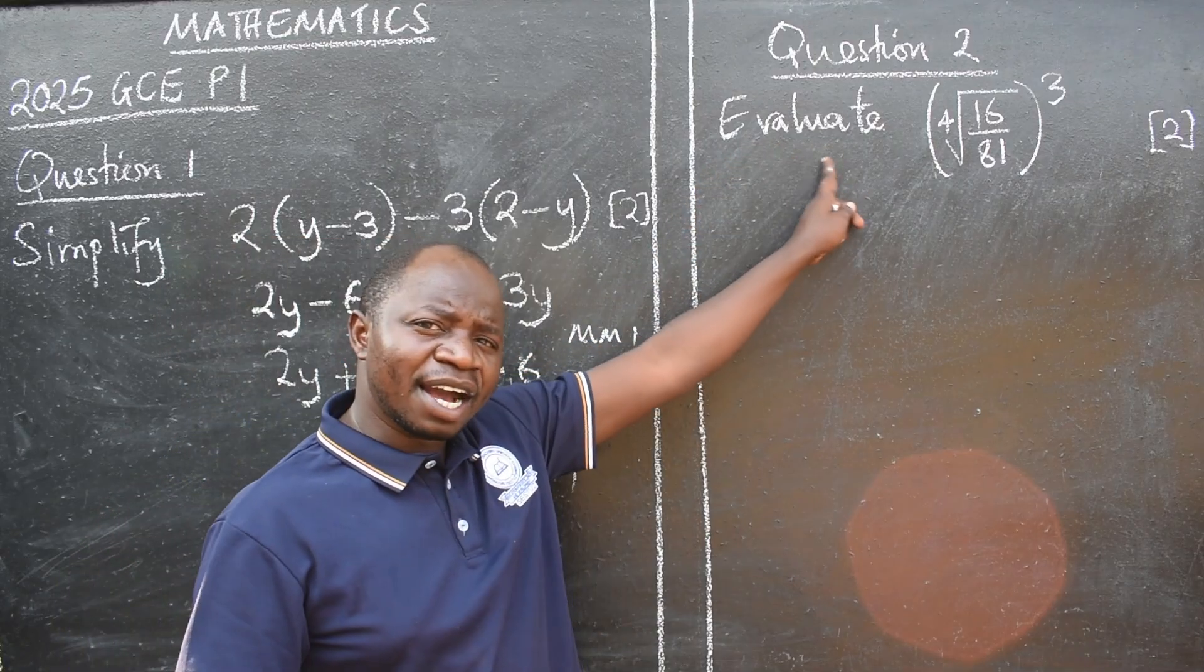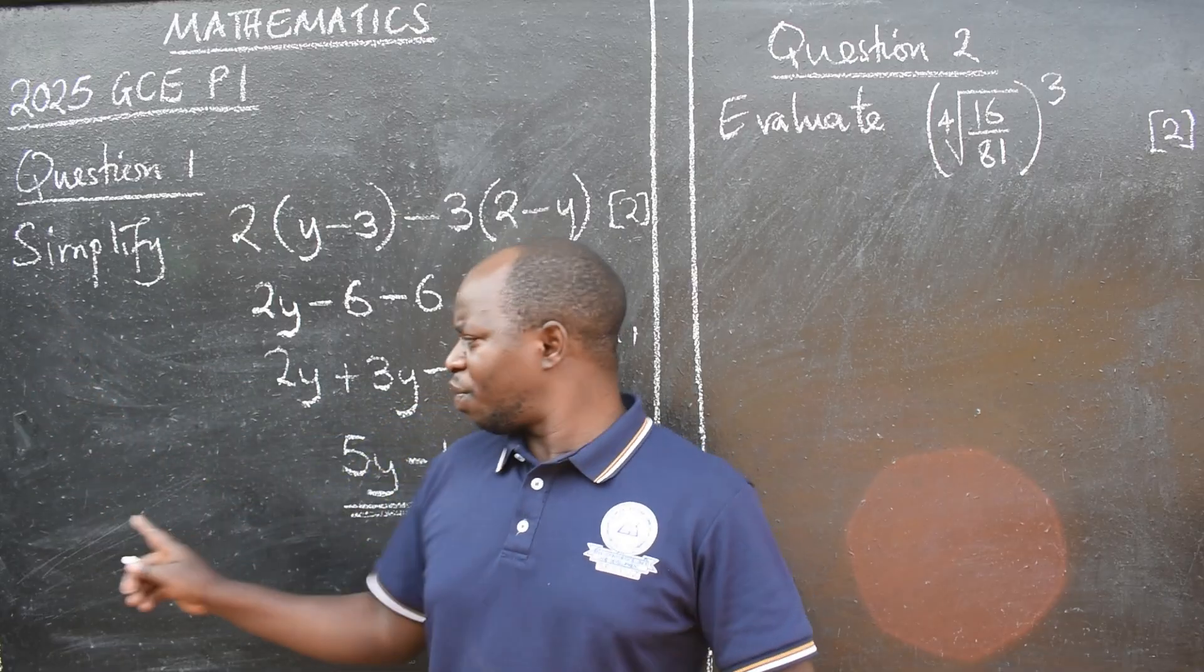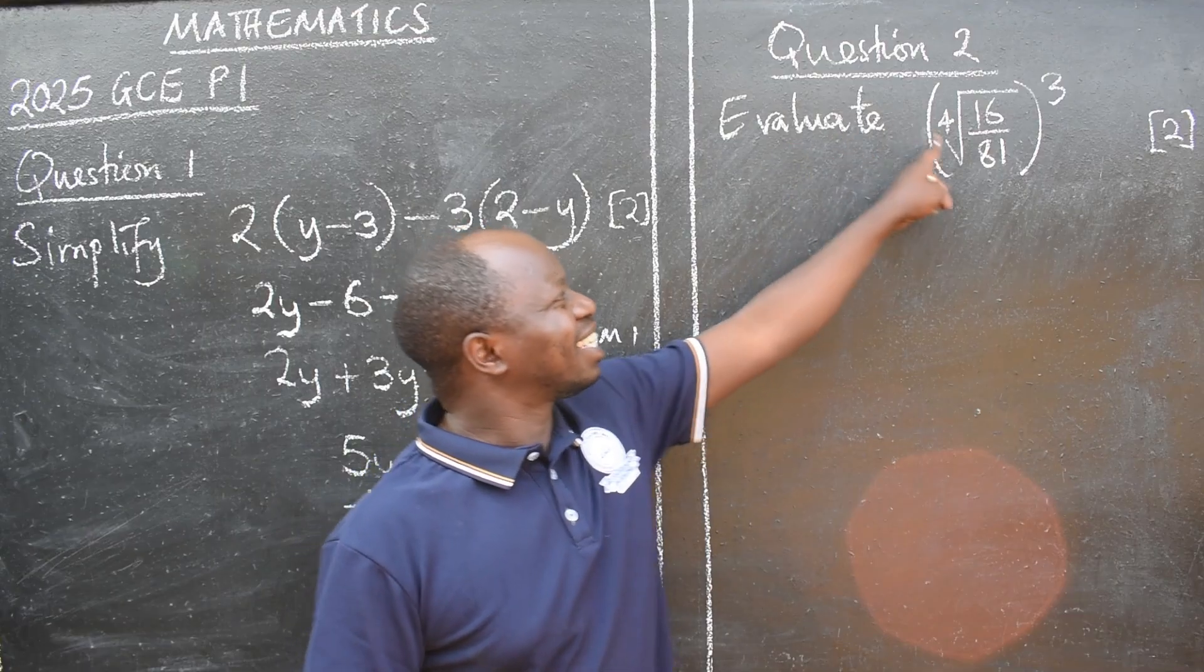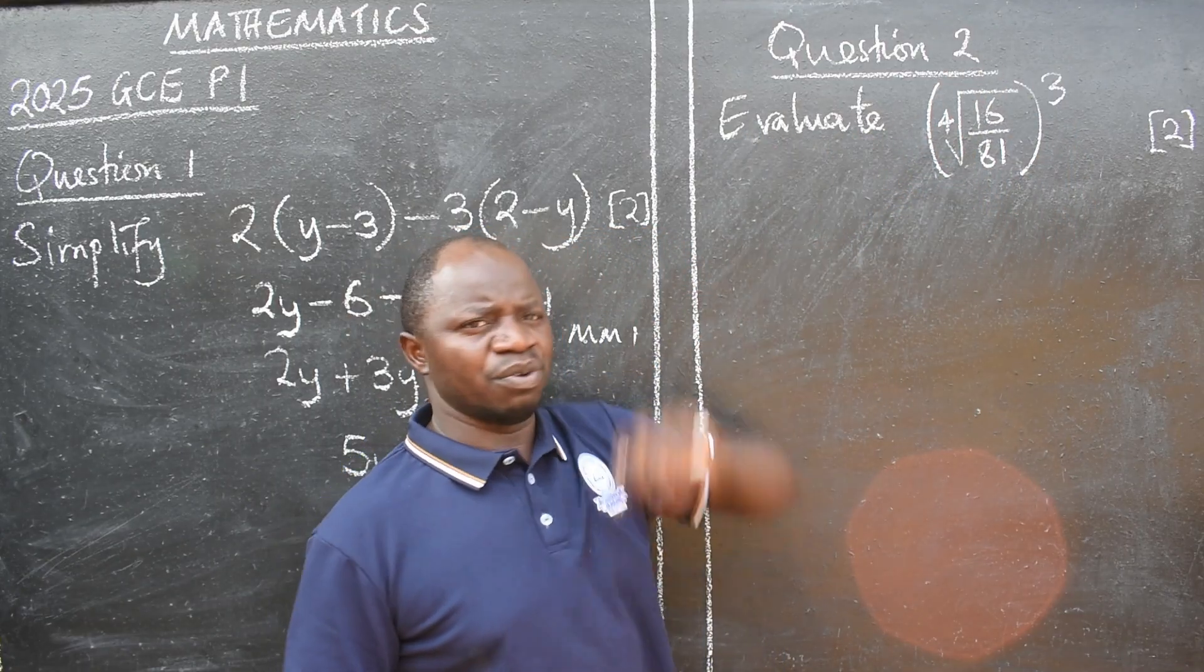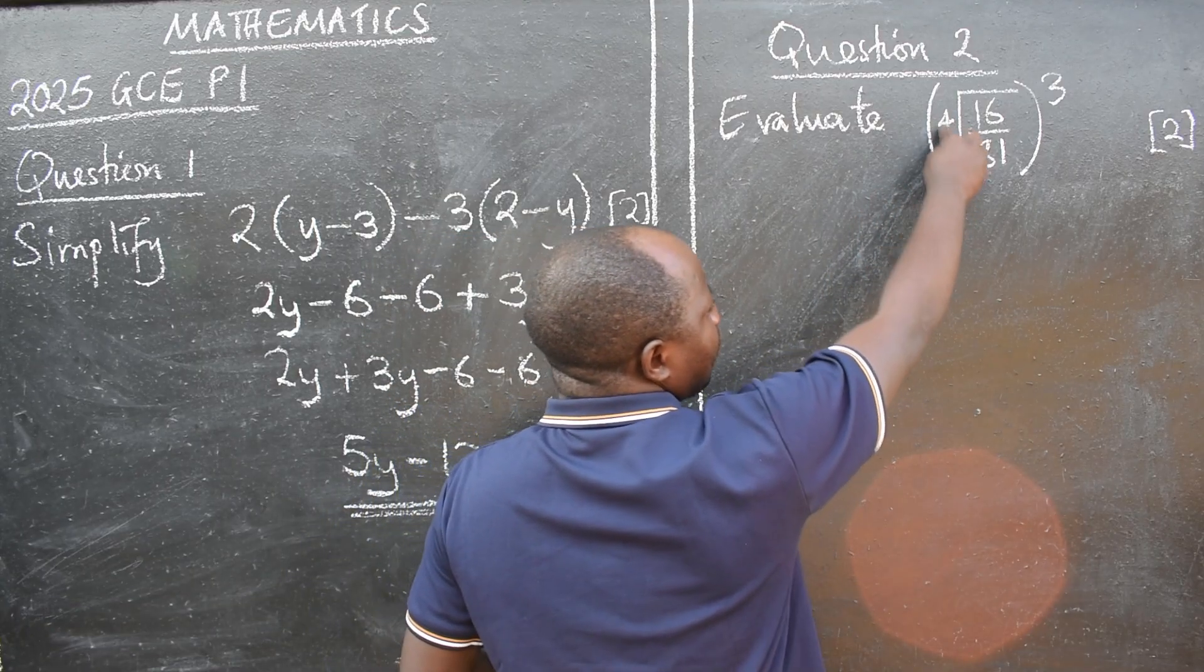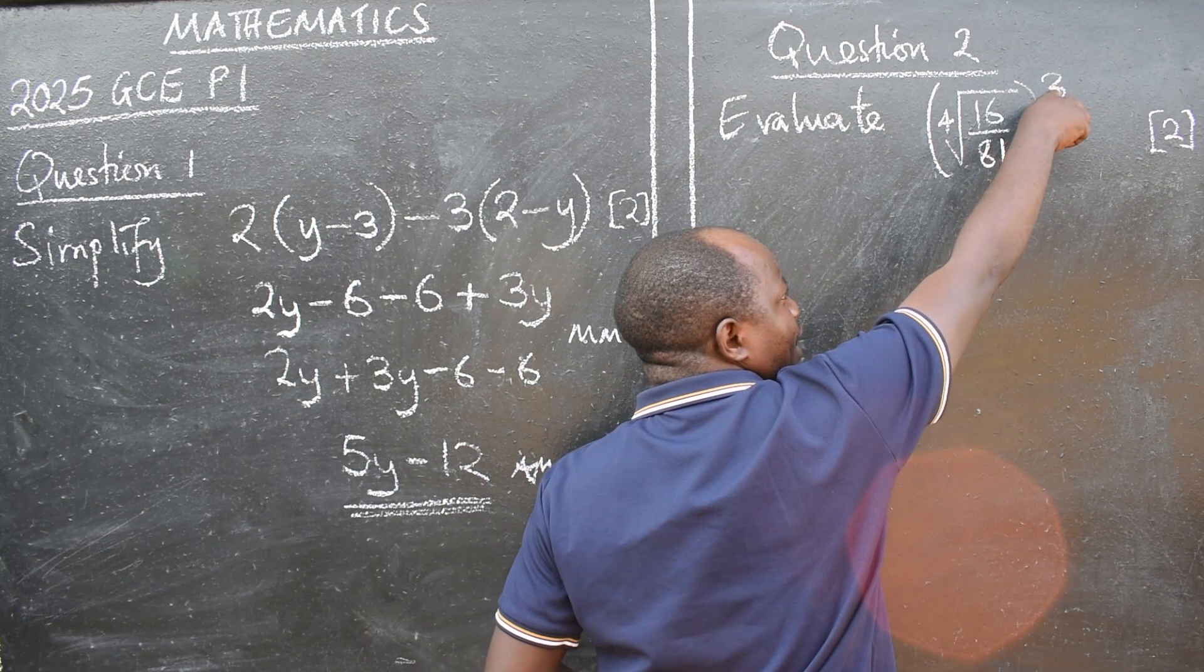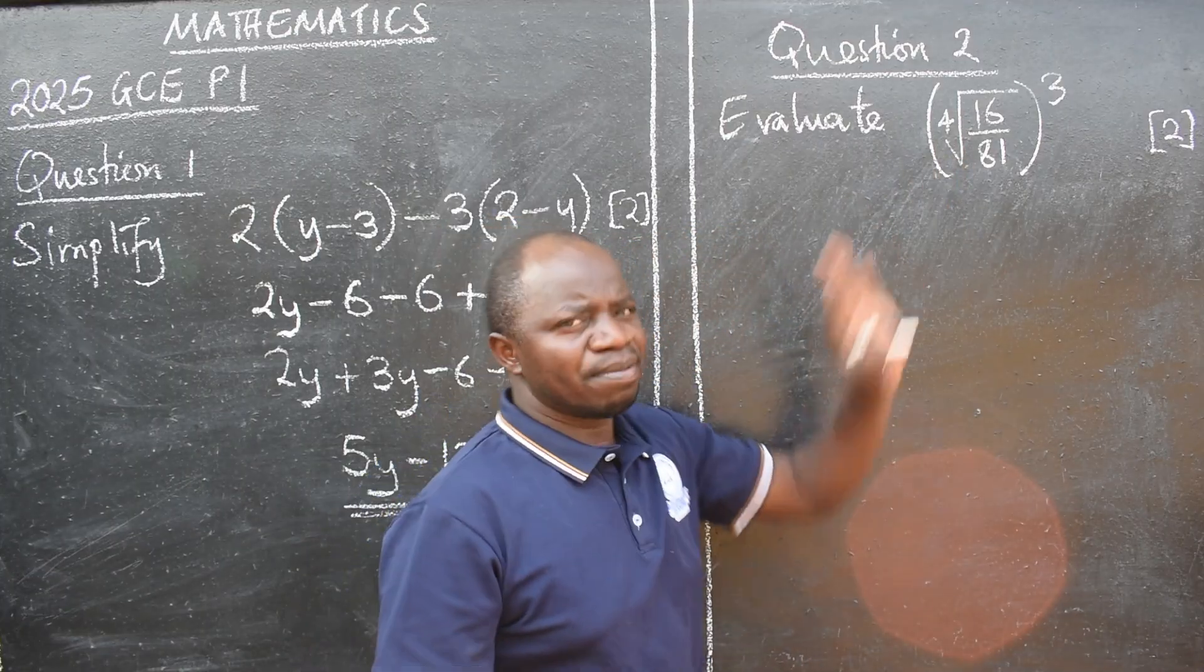Let's look at the second question. Evaluate. Here now, it's different from this. Here we are simplifying. We have shortened the number of terms. But here we want to find the exact value of this without the calculator. That is evaluate.